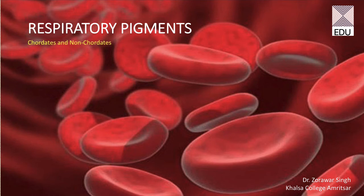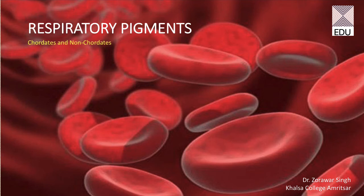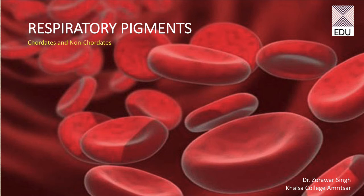The major function of respiratory pigments is that they can take up oxygen or carbon dioxide, go to a specific place, and release that particular gas wherever it is required. The three basic steps in the functioning of respiratory pigments are: first, uptake of the gas; second, transportation of the gas; and third, delivery of the gas to the target tissue.